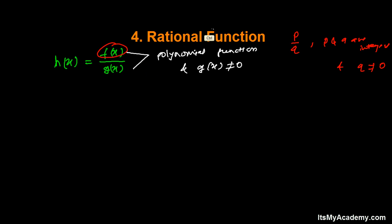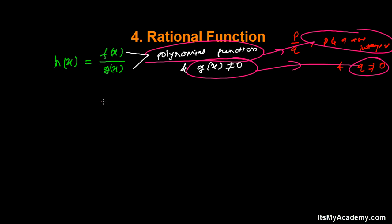If f(x) and g(x) are polynomials, just like p and q are integers, and g(x) is not equal to zero, it means q not equals to zero. It's exactly defined on the basis of that.